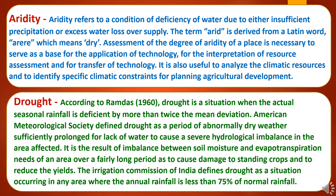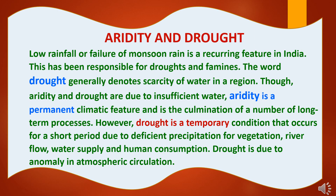Drought is also the result of imbalance between soil moisture, evapotranspiration, and the need of an area over a fairly long period, causing damage to standing crops and reducing yields. The Irrigation Commission of India defines drought as a situation occurring in any area where the annual rainfall is less than 75% of normal rainfall. Low rainfall or failure of monsoon rain is a recurring feature in India, responsible for droughts and famines. Drought generally denotes scarcity of water in a region and is a temporary condition due to deficient precipitation, while aridity is a permanent climatic feature.